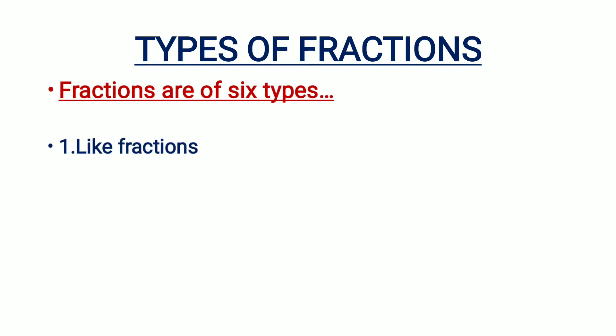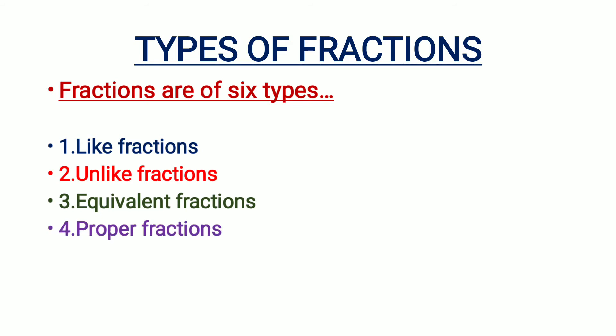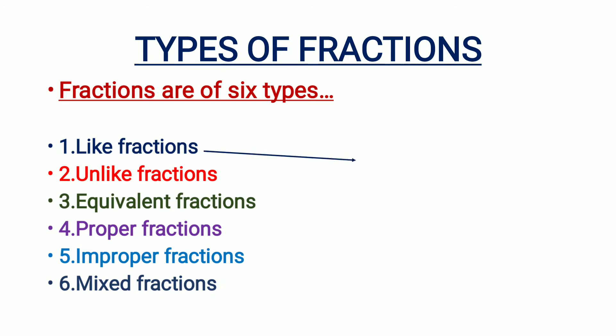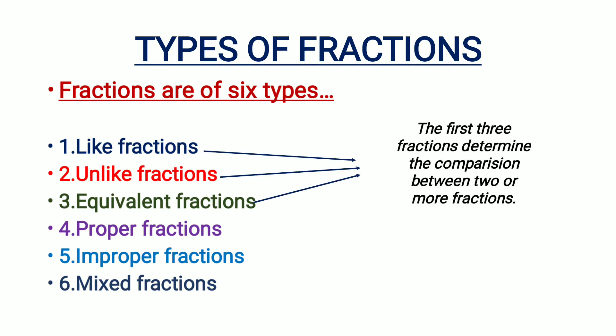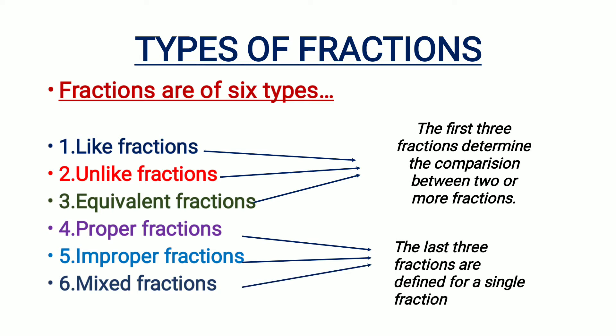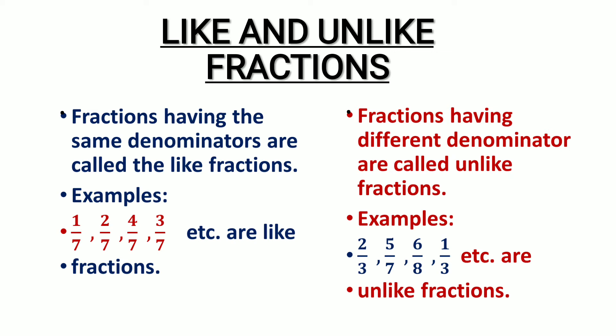Fractions are of six types: like fractions, unlike fractions, equivalent fractions, proper fractions, improper fractions, and mixed fractions. Among these, the first three fractions determine the comparison between two or more fractions, while the last three fractions are defined for a single fraction. Now, first are like and unlike fractions.